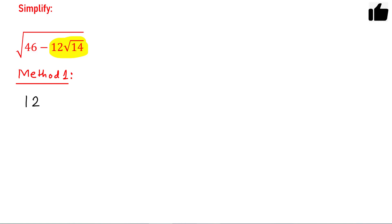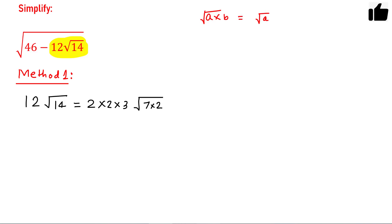So 12 times square root of 14. I can write 12 as 2 times 2 times 3, and 14 as 7 times 2. Using the rule that square root of (a times b) equals square root of a times square root of b, this becomes 2 times 2 times 3 times root 7 times root 2, which gives us root 2 times root 7.